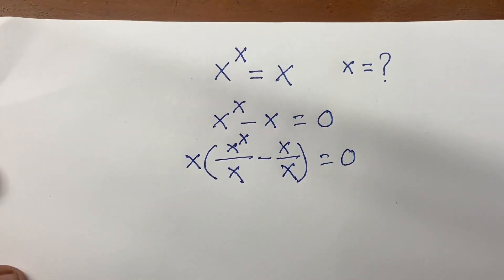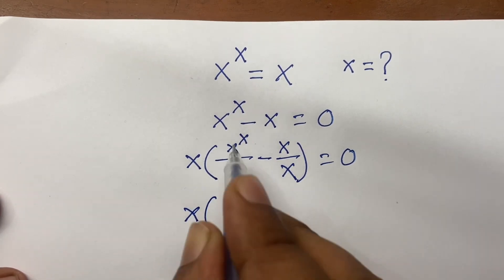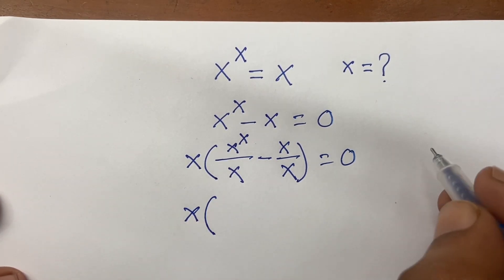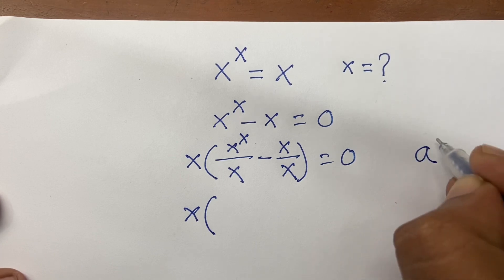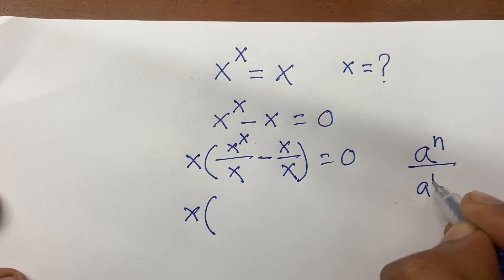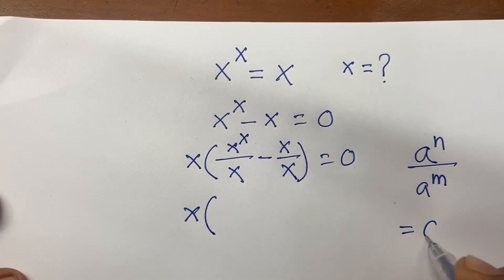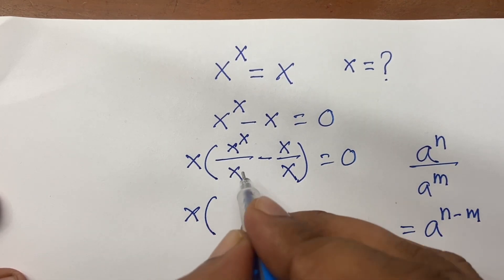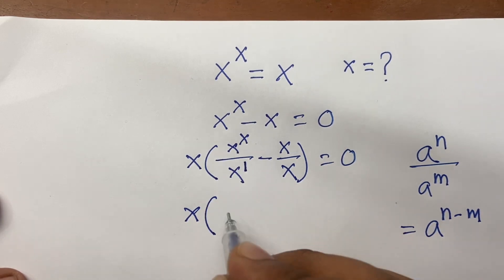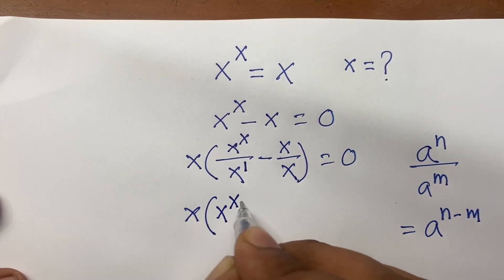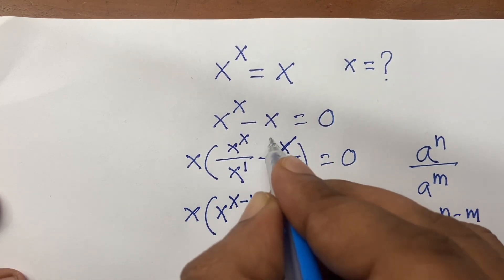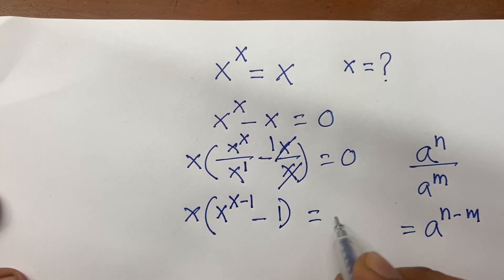Now I can say x times x to the power x over x. We know that according to exponential rules, a to the power n over a to the power m equals a to the power n minus m. I follow these rules in this line. Now here the exponent is 1, so I can say here is x to the power x minus 1, minus 1, equal to 0.